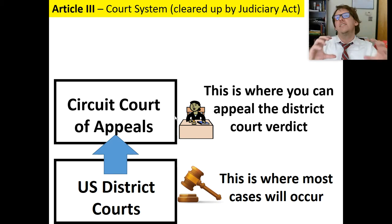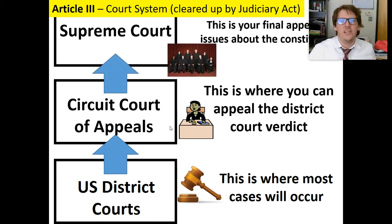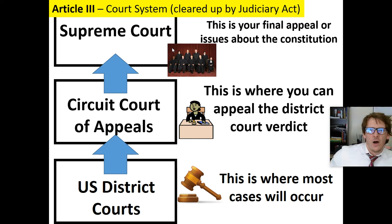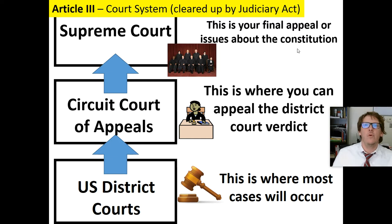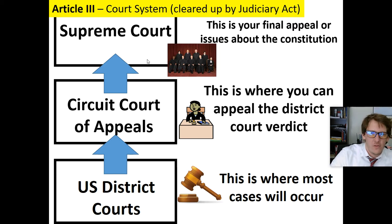U.S. District Court is where original cases are held. The Circuit Court of Appeals hears appeals from the District Courts and lower courts. And then Article 3 of the Constitution explains the Supreme Court, which is the final court of appeal. You can keep appealing upward, and if you go to the Supreme Court, they will listen to your case.